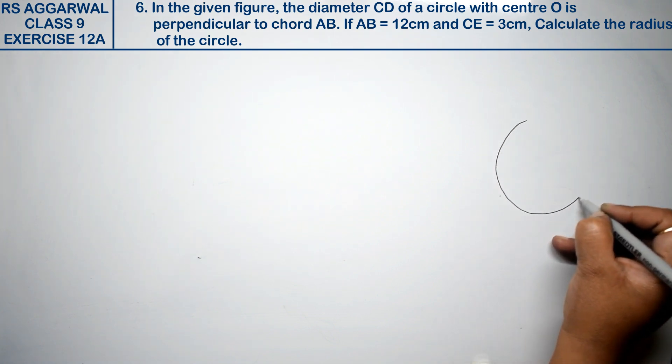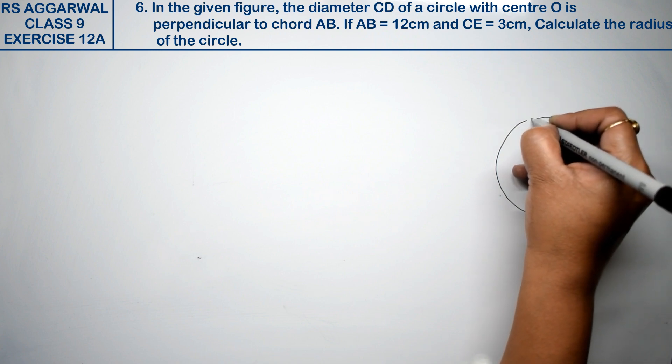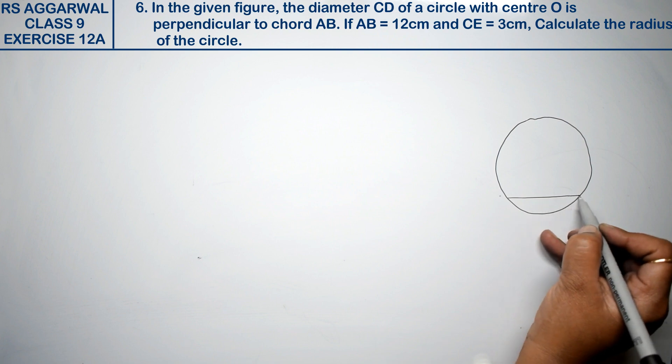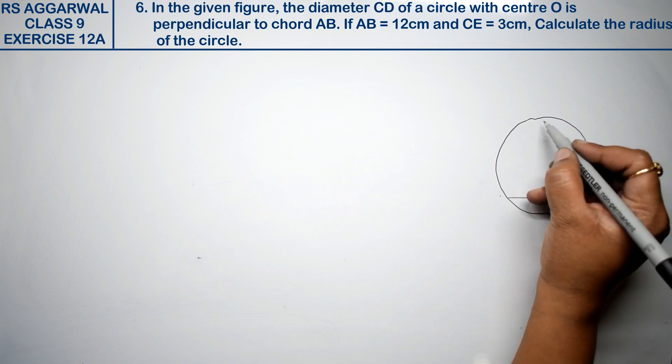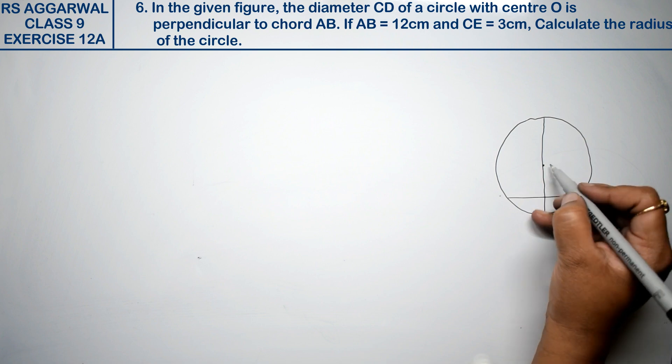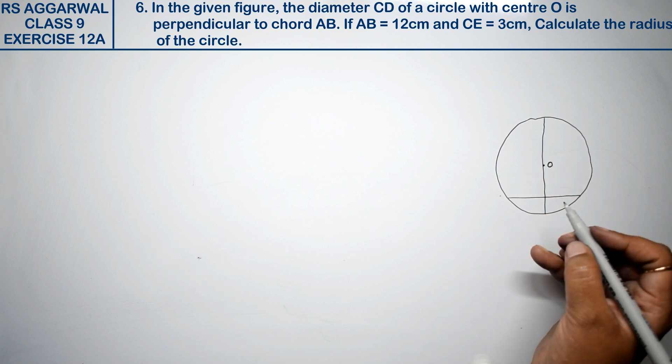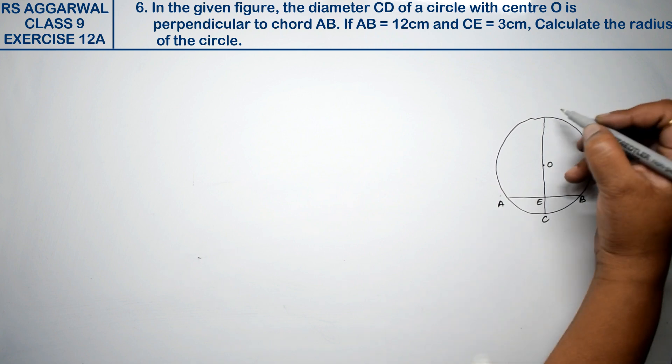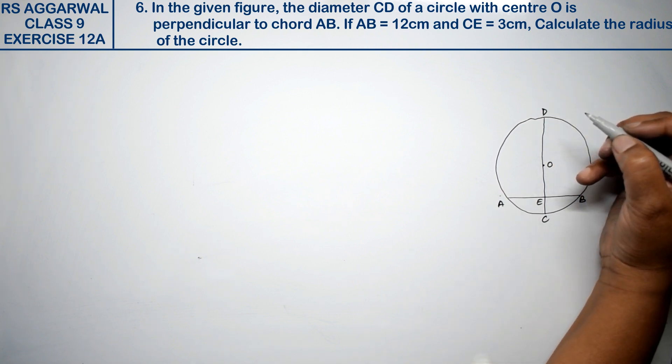There is a circle with a chord AB, and in the center there is another chord. This is O, sorry A, B, C, and D. Right? What are we saying? We are making a 90 degree angle.